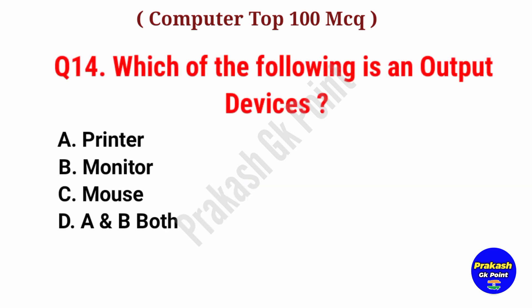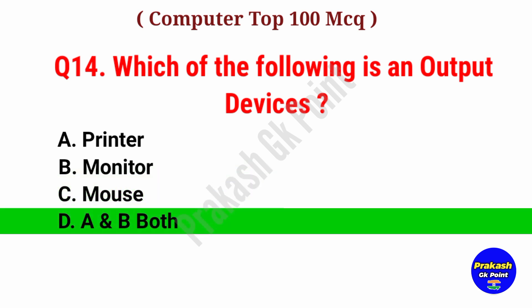Which of the following is an output device? Answer: Option D, A and B, both Printer and Monitor.